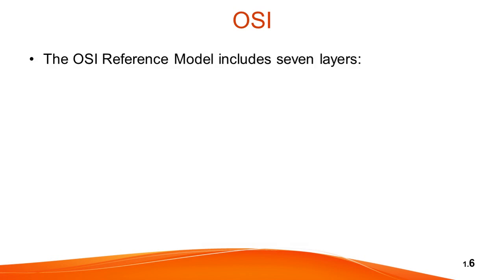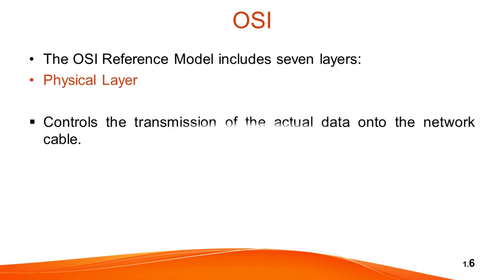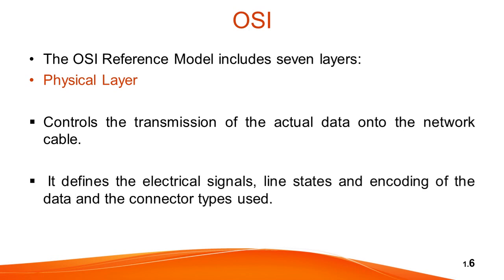First is the Physical layer. The Physical layer controls the transmission of the actual data onto the network cable. It defines the electrical signals, line states, encoding of the data, and the connector types used — for example, 10Base-T. The Physical layer is concerned with the transmission of raw bits over a communication channel.